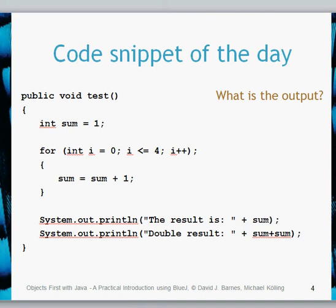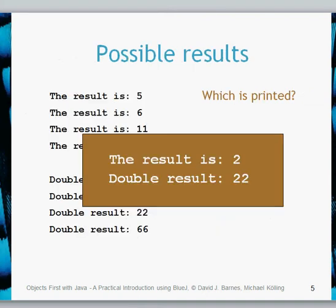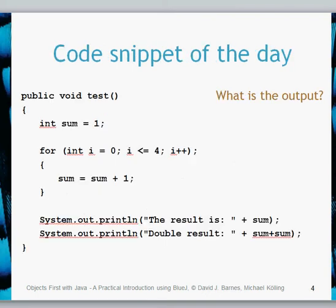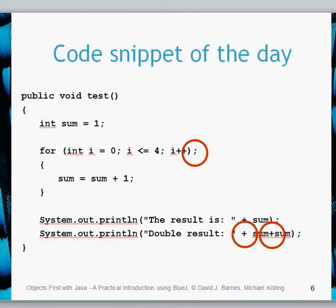I want you to have a quick look at that code and see if you can spot the problem. At first glance it would appear normal, so pause the video and have a look to see if you can work it out. The actual answer produced is that the result is 'double result 22'. That doesn't make much sense until you see where the error is — the error is shown by a semicolon.